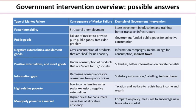Next, negative externalities, and some of you might have come across the concept of a demerit good, which is really to do with information failure — thinking something is better for us than it actually is. Both of these types of market failure lead to over-consumption of products that are bad for us and society. Suggested interventions include information campaigns, minimum ages for consumption as an example of rules and regulations, and — shown there in bold — indirect taxes.